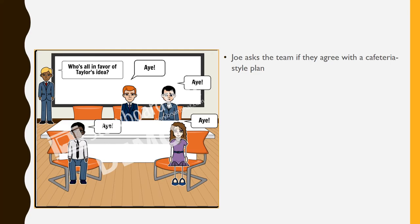Joe asks the team if they agree with the cafeteria style plan, and they all do. Through this group decision, Joe has been able to save on costs.